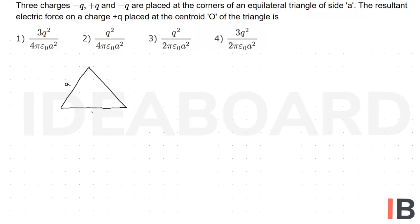At the three corners, they put minus Q and plus Q and a minus Q charges. And apart from that, they placed a plus Q charge at the centroid O.